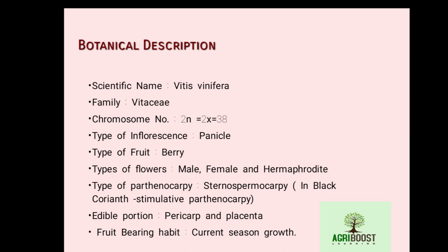The types of flowers present in grape are male, female, and hermaphrodite flowers. Hermaphrodite flowers contain both male and female parts within the flower only. The type of parthenocarpy present in grape is stenospermocarpy, which means the development of fruit takes place without seed — it develops a seedless fruit because of abortion of a seed.